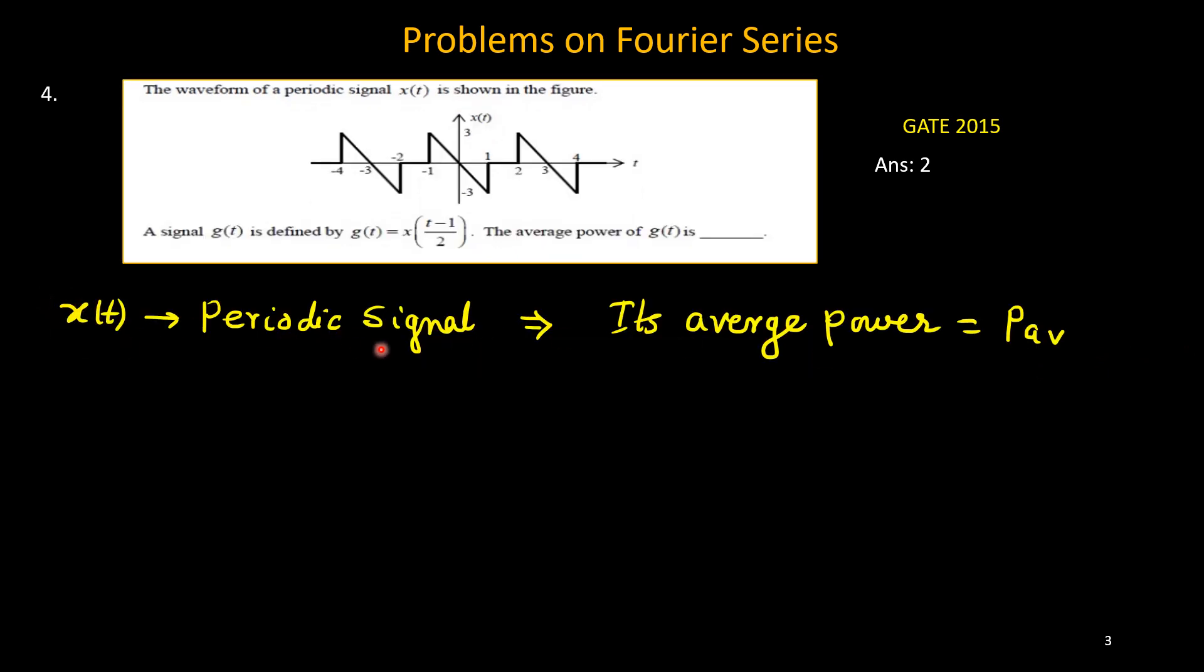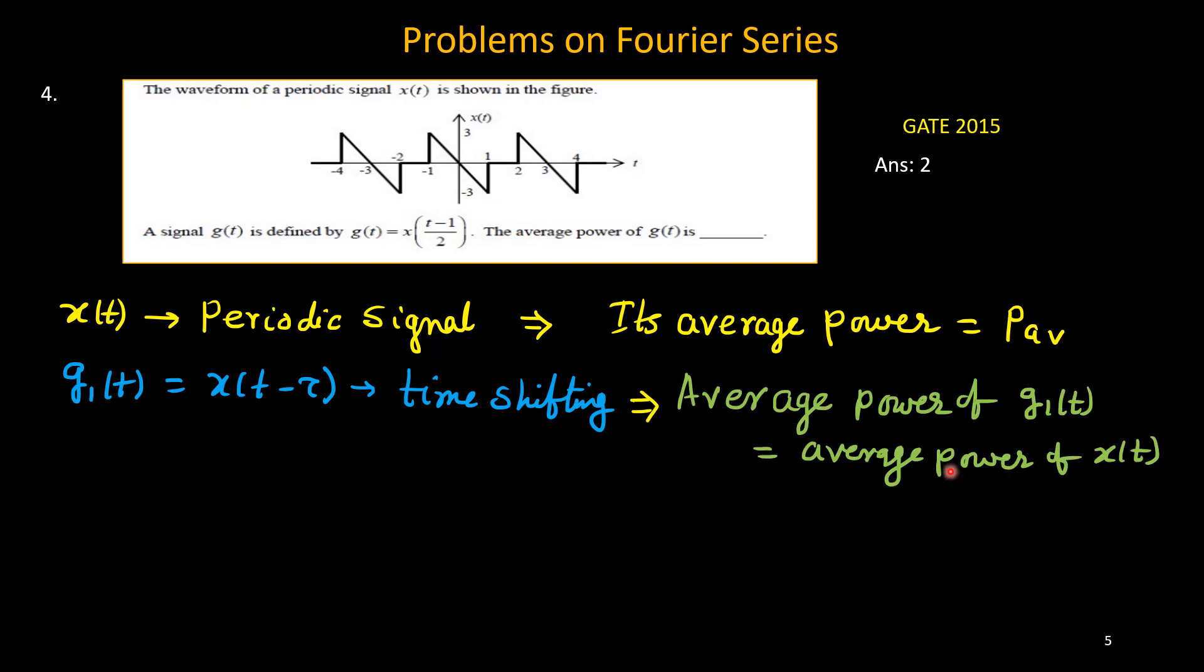As x(t) is a periodic signal, obviously it is having one average power. Suppose it is P_av. Now if I consider g1(t) as x(t minus tau), that is if x is shifted right side or left side little bit, there is a time shift. Then what is the average power for g1(t)? Now as there is a time shift only, shape is not changing. Obviously the average power will remain same. So average power of g1(t) and x(t) will remain same.